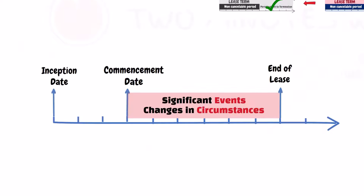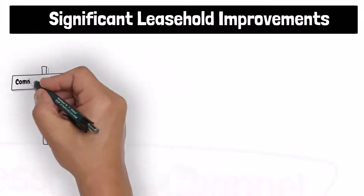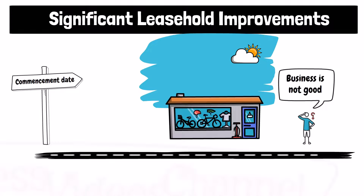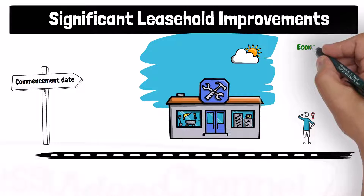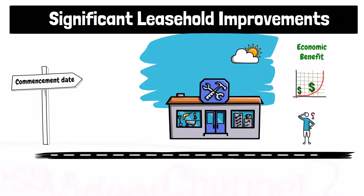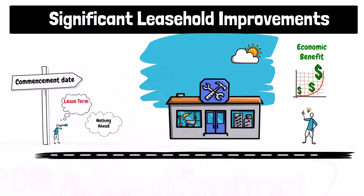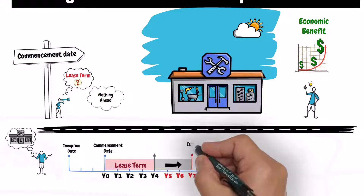Examples of significant events or changes in circumstances that might occur after the commencement date include significant leasehold improvements. After the commencement date, the lessee might discover that it needs to undertake some leasehold improvements to the underlying asset. These improvements are expected to have a significant economic benefit for the lessee, and were not anticipated on the commencement date when the lessee was first assessing the lease term. If the lessee knew about it on the commencement date, the length of the lease term would have been assessed differently.